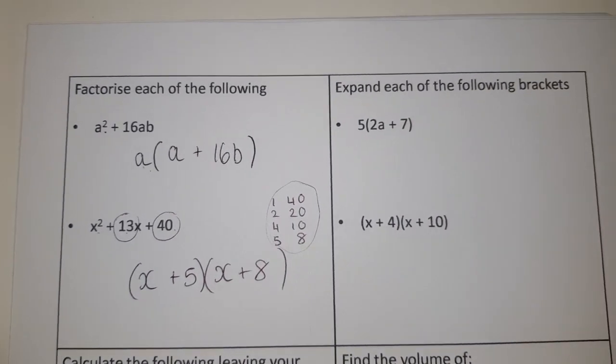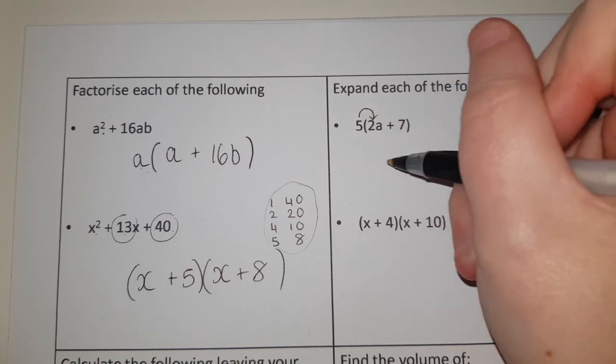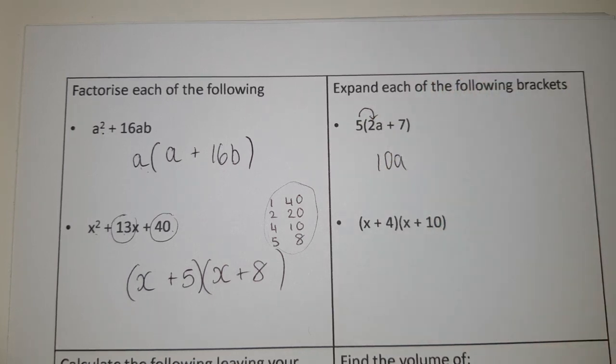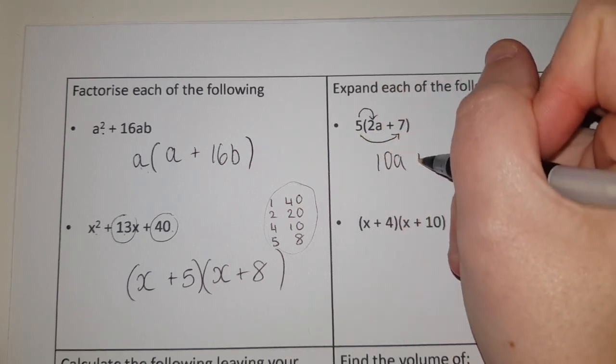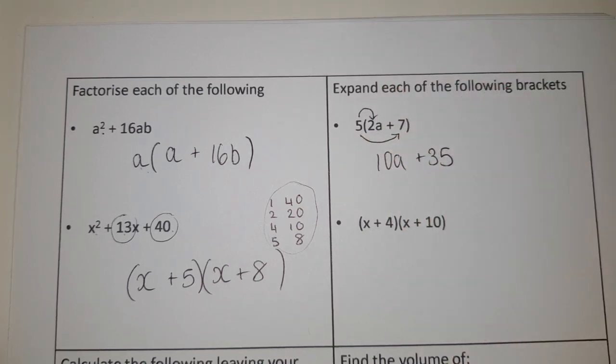If I look at expanding a single bracket, 5 times 2A is 10A. Sorry guys, and then 5 times 7 is 35.